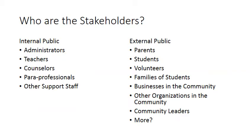We've talked a bit about the stakeholders, and in a school we have many more stakeholders than we might first think about. These may be classified into two different types. Internal public, such as administrators, teachers, counselors, paraprofessionals, and other support staff. As well as external public, such as parents, students, volunteers, families of students, businesses in the community, other organizations in the community, community leaders, and more.